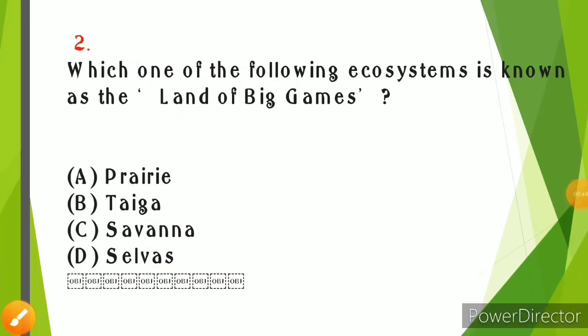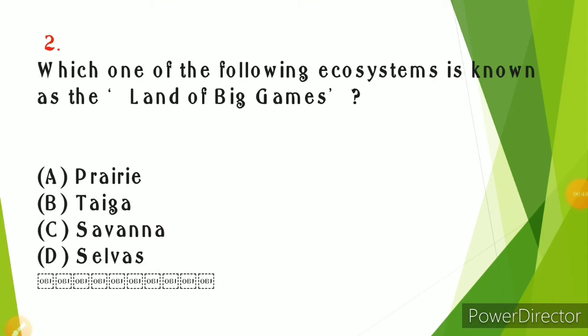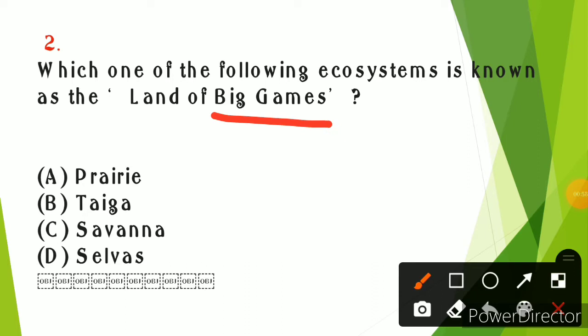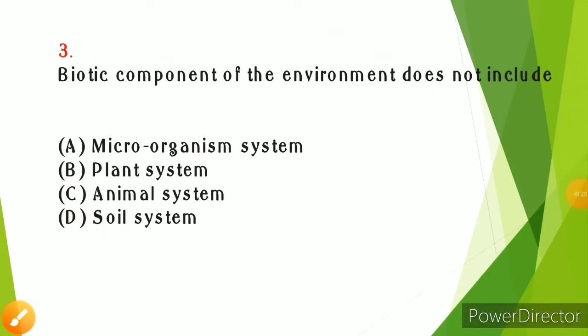Second question: Which one of the following ecosystems is known as the land of big game? Big game means large animals which are hunted or fished for sports purposes. The answer is Savanna, because every year thousands of animals are trapped or killed by people from all over the world. Savanna is located near the equator and covers countries in Africa, Australia, South America, and some parts of India.